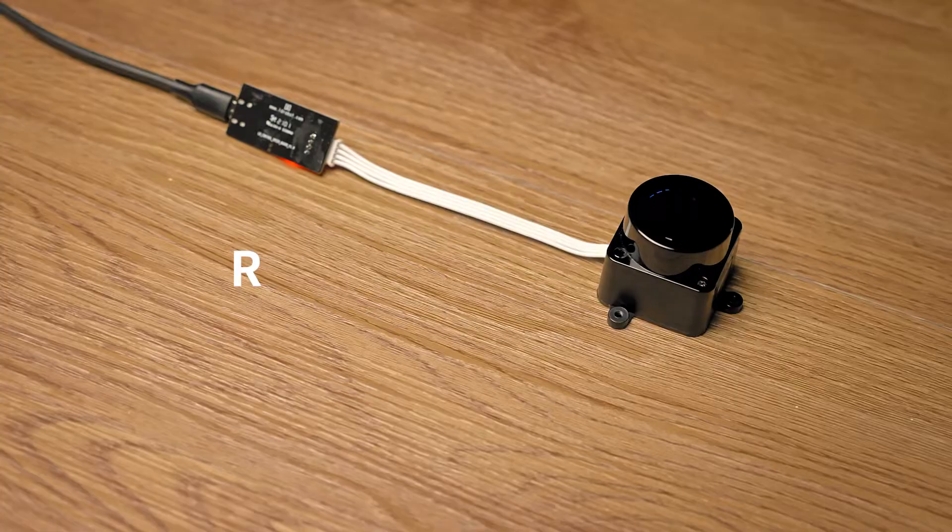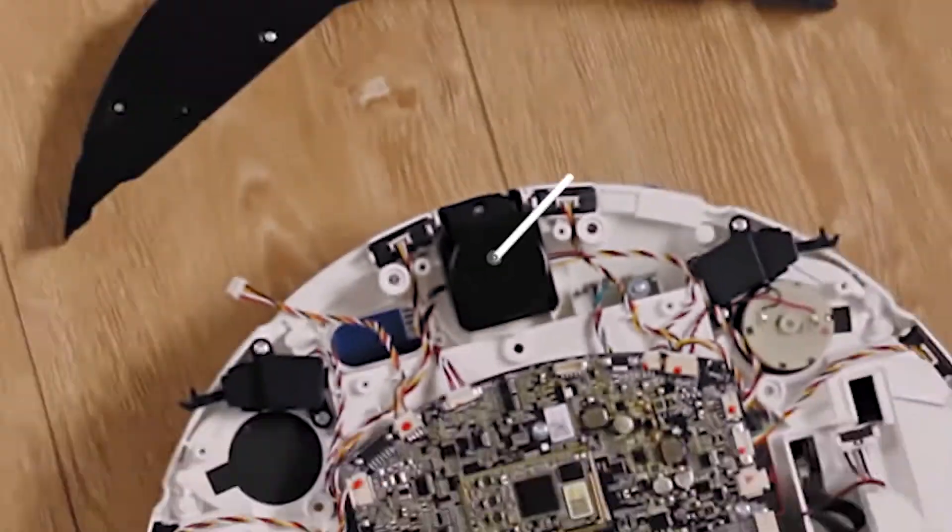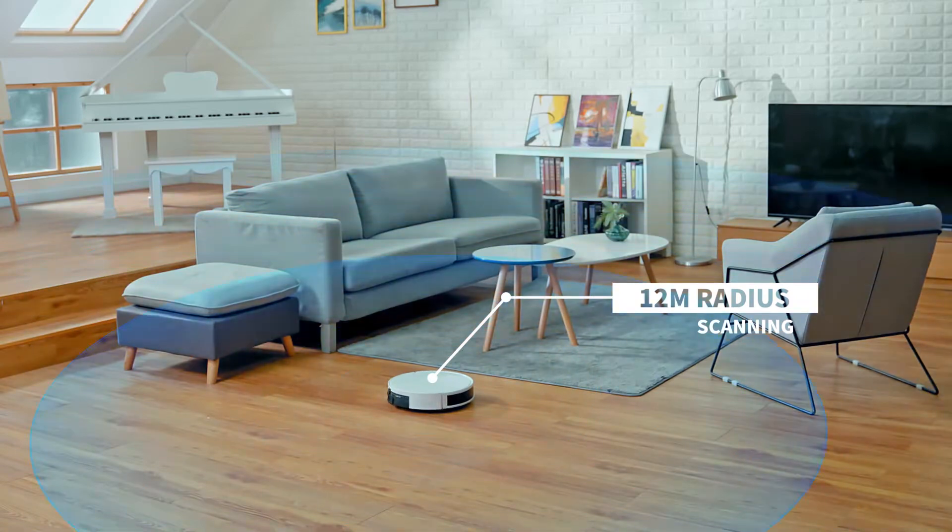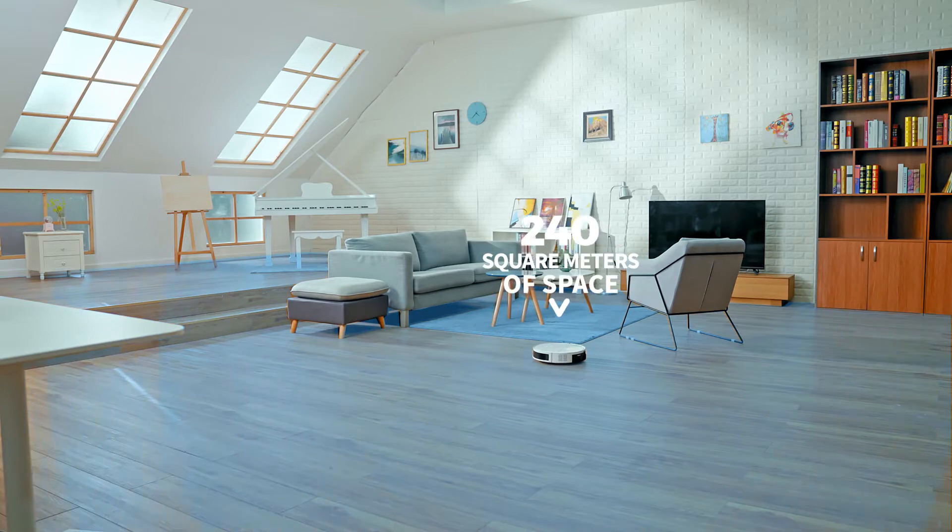It provides 360-degree sensing capability to any robot to enable robotic automation. It has a scanning radius of 12 meters and can easily measure a space of more than 240 square meters.